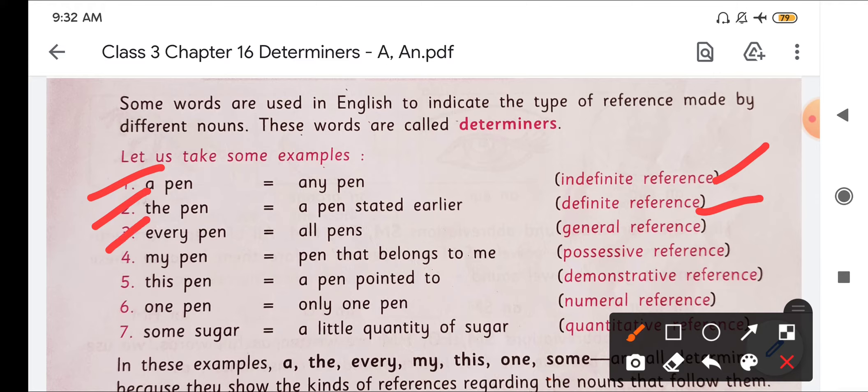Then the third one, every pen, that means all pen. We are talking about all pen. So it is in general reference. My pen, pen that belongs to me, that is possessive reference. Then this pen, a pen pointed to, that is demonstrative.